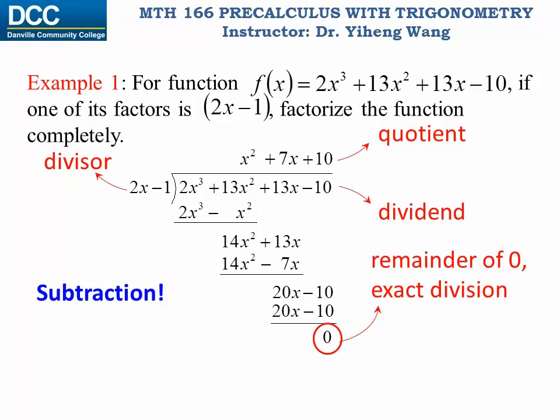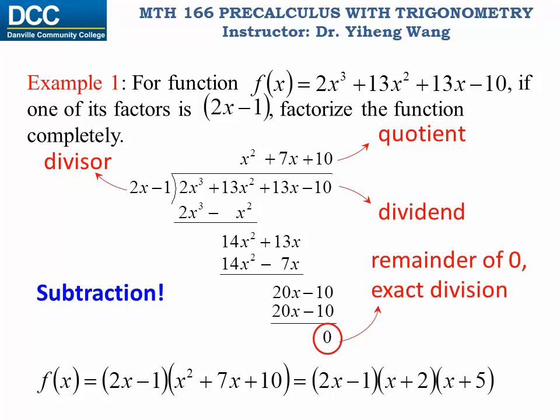This indicates the original function equals to 2x minus one multiplied by a quadratic factor, x squared plus 7x plus 10. And this quadratic factor is not difficult to factorize — it is x plus 2 multiplied by x plus 5. Now this original function has been completely factorized into a product of three linear factors.